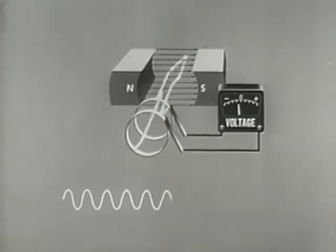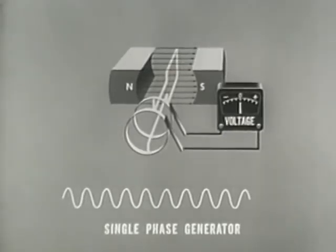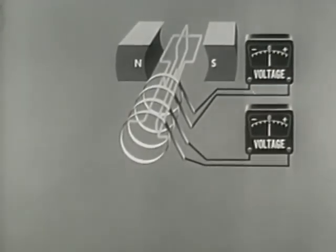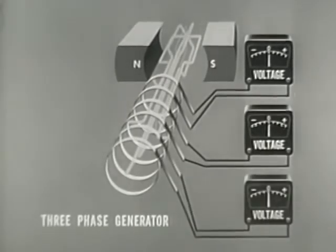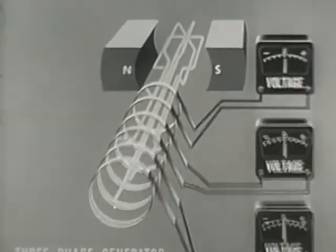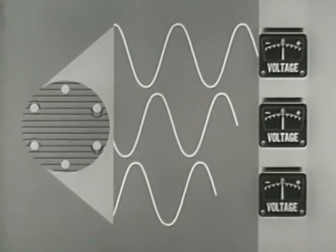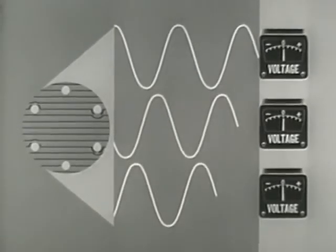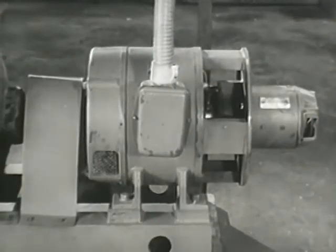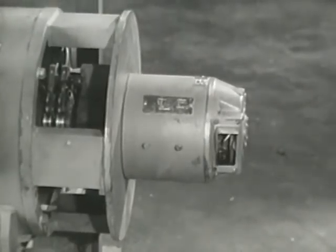The simplest AC generator is the single-phase generator, which produces a single AC voltage. In the two-phase generator, we find two loops 90 degrees apart, and in the three-phase generator, three loops 120 degrees apart. The output of the three-phase generator will be three AC voltages 120 degrees out of phase. The field of an AC generator is always excited by a DC voltage — in this case, by a small DC generator in tandem.